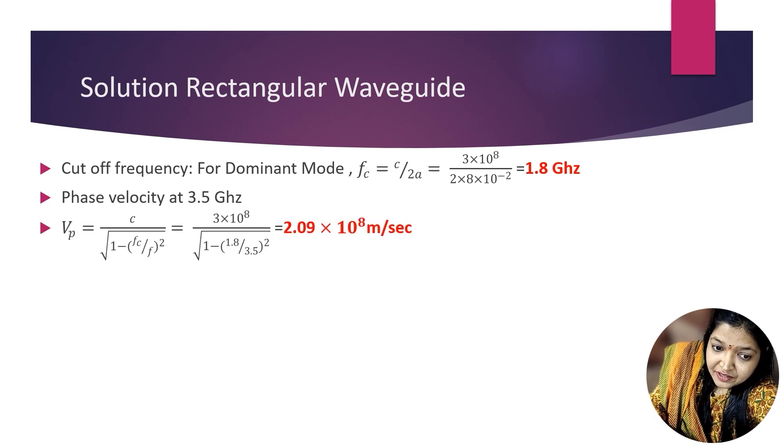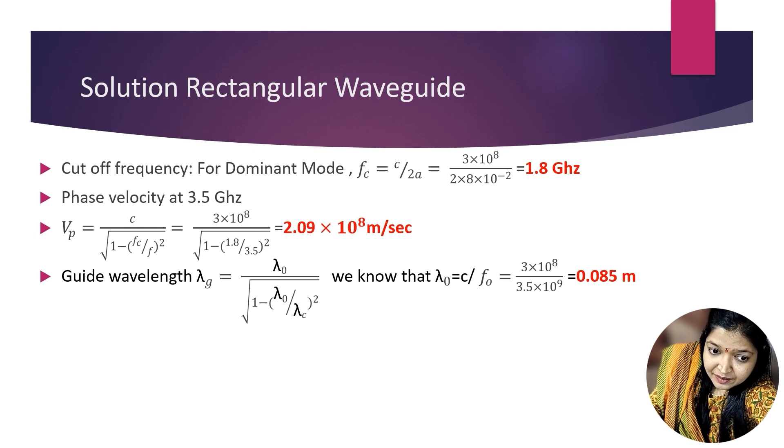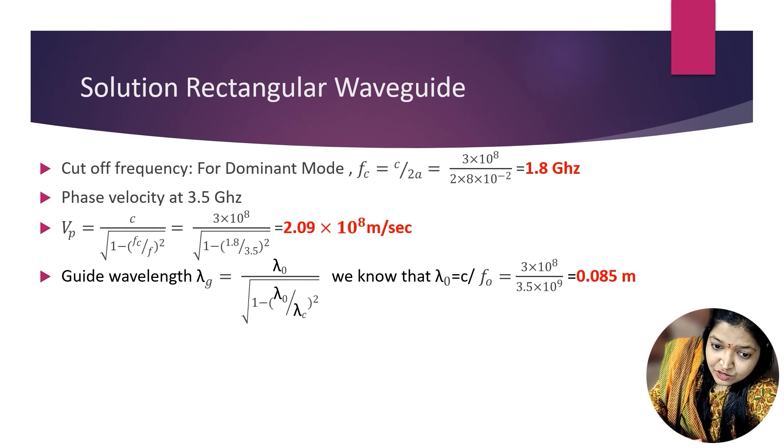Then phase velocity at 3.5 GHz. So phase velocity Vp equals C divided by under root of 1 minus Fc divided by F whole square. So put the values: C value 3 into 10 raise to 8, Fc 1.8 that we already calculated, and the F at which operating frequency we want to calculate the phase velocity given is 3.5 GHz. So your answer is 2.09 into 10 raise to 8 m per second.